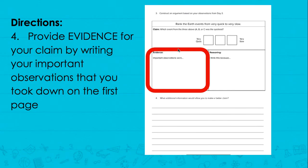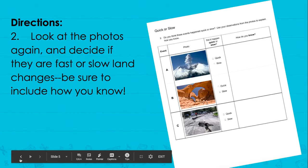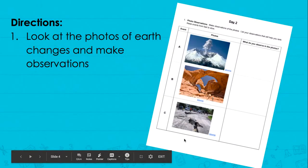Next you are going to provide evidence for your claim, which are almost like reasons, by writing your important observations that you took down on the first page. So you're going to go back to the first page and put down some of the observations that you wrote about those land changes.